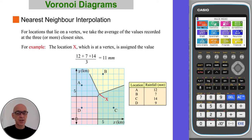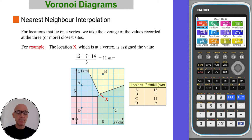For locations that lie on a vertex, we take the average of the values recorded at the three or more closest sites. For example, location X, which is at a vertex, is assigned the value 11 mm, which is the average of 12, 7 and 14, the values recorded at sites A, B and C, the adjacent sites to the vertex.